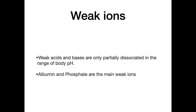Weak ions are acids and bases that are only partially dissociated across the range of body pH. The common weak ions are albumin and phosphate.